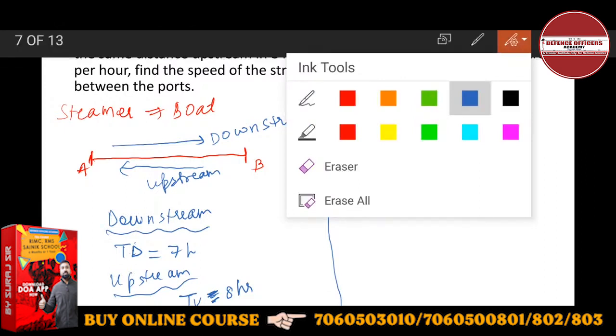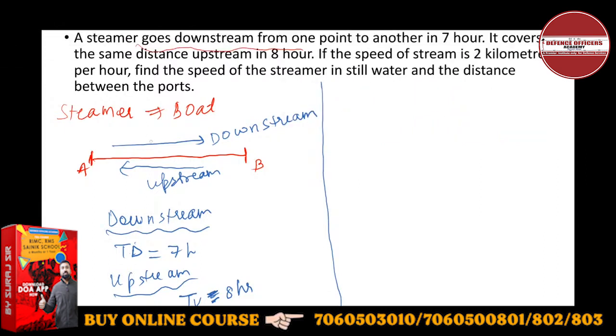You can take the distance from A to B as D kilometers. The distance is the same in both cases - downstream and upstream, the distance is the same.